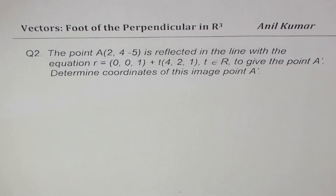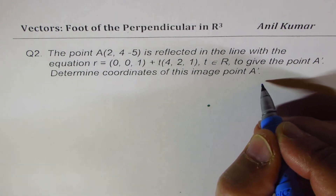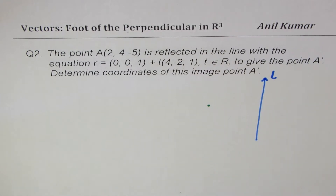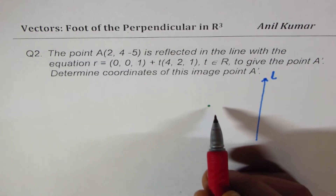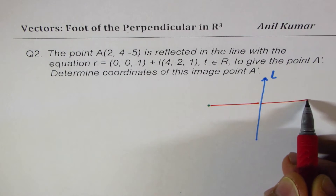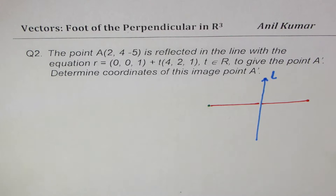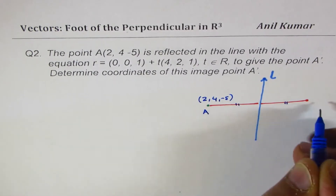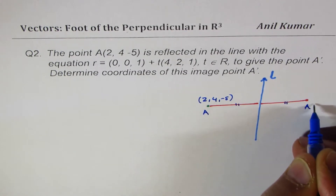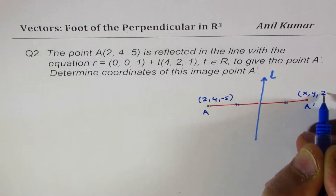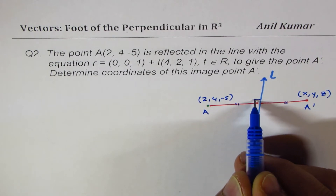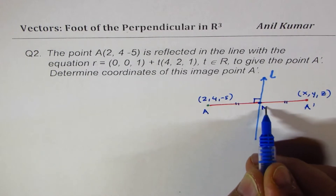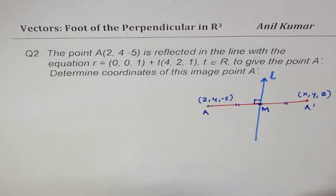Let's try to understand the question first. Let us say we are given a point A somewhere and we have a line — for simplicity, just a vertical line, let's say that's line L. When we say the point is reflected on the line, it really means the distance is the same — like a mirror. So point A(2, 4, -5) is the same distance away on the other side of the line, giving point A dash with coordinates x, y, z. We need to find a midpoint M, then use the midpoint formula to find A dash.